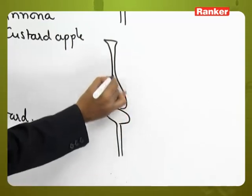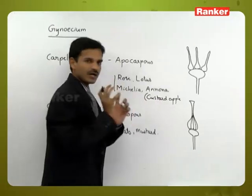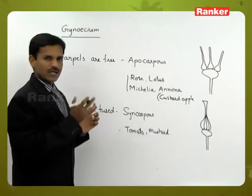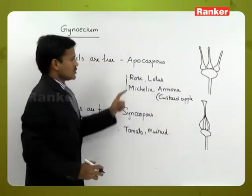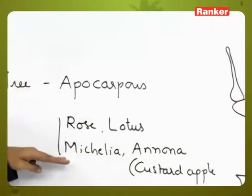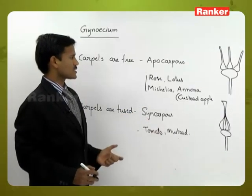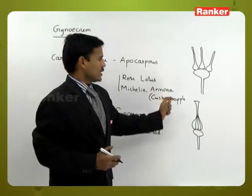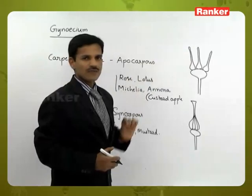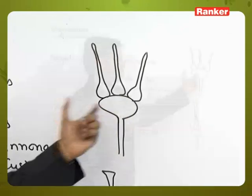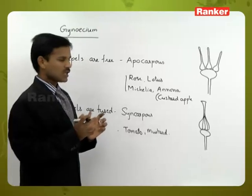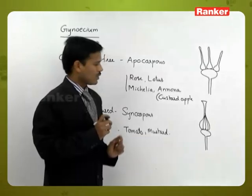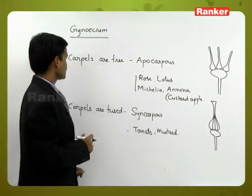In the Syncarpous condition, a number of carpels are present on the Thalamus but all of them are fused to form a single ovary with a shared style and stigma. Externally it appears like only one carpel. After fertilization, all the ovaries are fused to form a single fruit. In the Apocarpous condition, small fruitlets are formed and aggregated on the Thalamus, whereas in Syncarpous condition all ovaries develop into a single fruit.